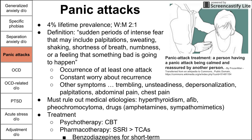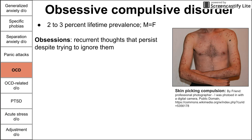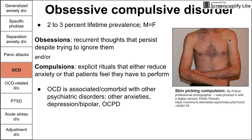Next up is OCD, obsessive-compulsive disorder. Prevalence is two to three percent, equal between men and women. OCD is composed of obsessions and/or compulsions. Obsessions are recurrent thoughts that persist despite trying to ignore them, and compulsions are explicit rituals that either reduce anxiety or that patients feel they have to perform. OCD is comorbid with many other psychiatric disorders, especially anxiety disorders, depression, bipolar, and OCPD.